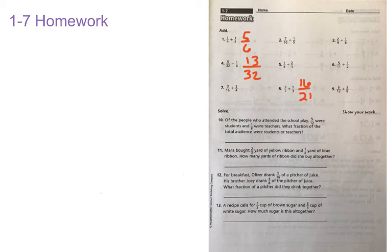We're going to go ahead and look at some of our word problems here. Number 10, of the people who attended a school play, 5 12ths were students and 1 8th were teachers. What fraction of the total audience were students or teachers? And so it's asking students or, which is actually kind of an odd way of saying that it's either one or the other. So we have to add those together, and so it's 5 12ths plus the 1 8th. And now we have to come up with a common denominator, and we know that 8 can't go into 12 evenly, so we're going to figure out what the least common multiple is.